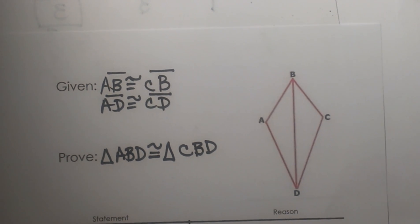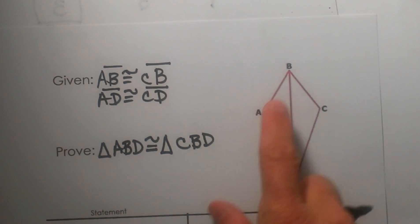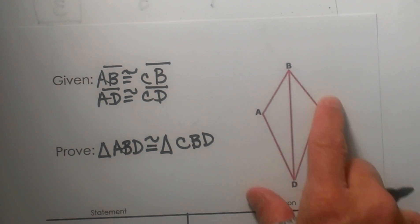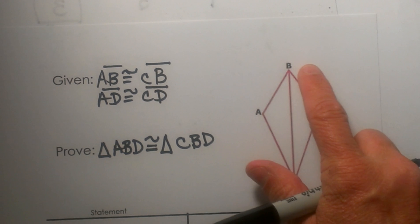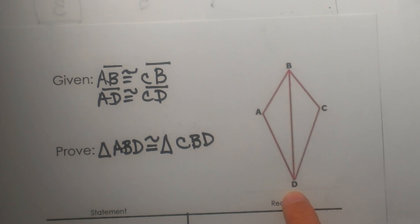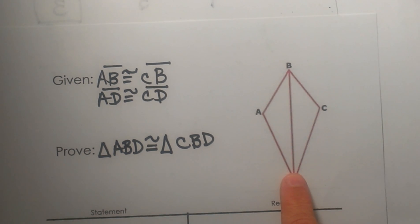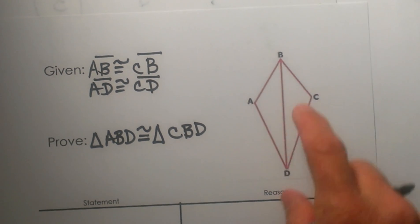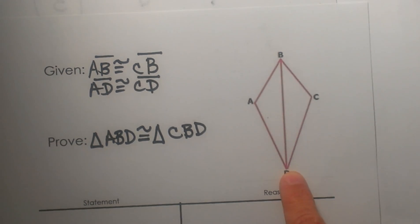Welcome to Moo Moo Maths. Today we are going to look at a proof. Here is our figure: ABCD is a quadrilateral, and in that quadrilateral we have a line drawn right down the middle, BD.